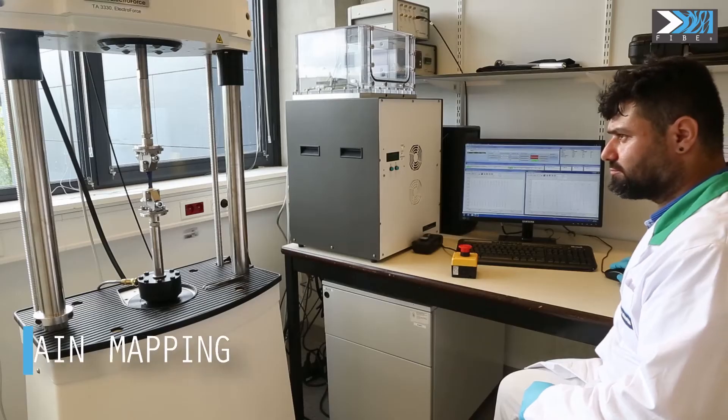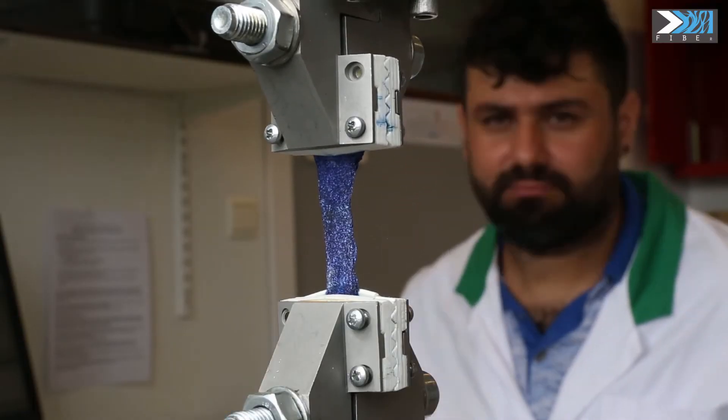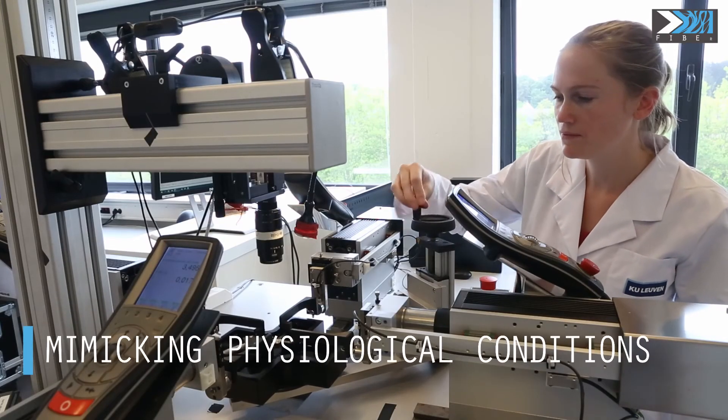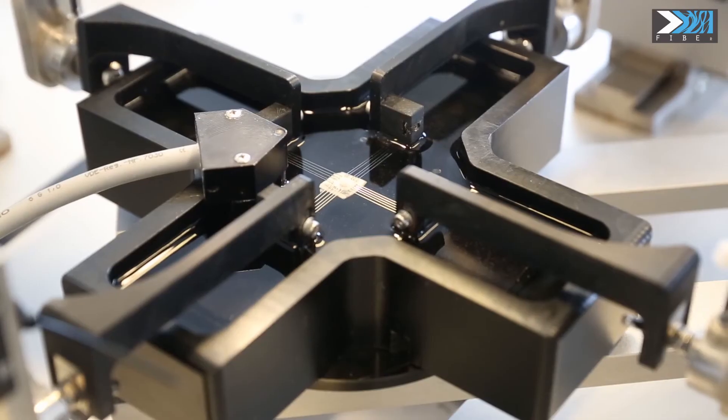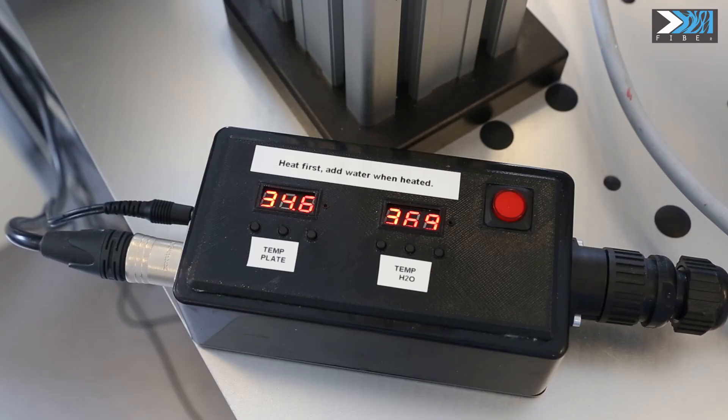During the mechanical test, we measure the non-uniform deformation of the sample by applying a speckle pattern to the tissue and using digital image correlation. We mimic the physiological conditions as closely as possible by performing our tests in physiological solution at body temperature.